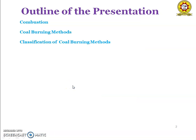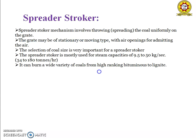The outline of my presentation is combustion classifications, in that spreader stoker and under feed stokers. The first one is spreader stoker. The spreader stoker mechanism involves throwing or spreading the coal uniformly on the grate.